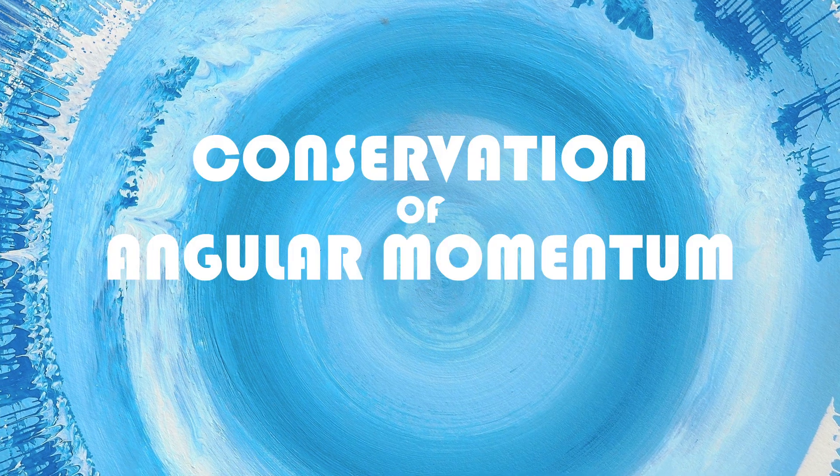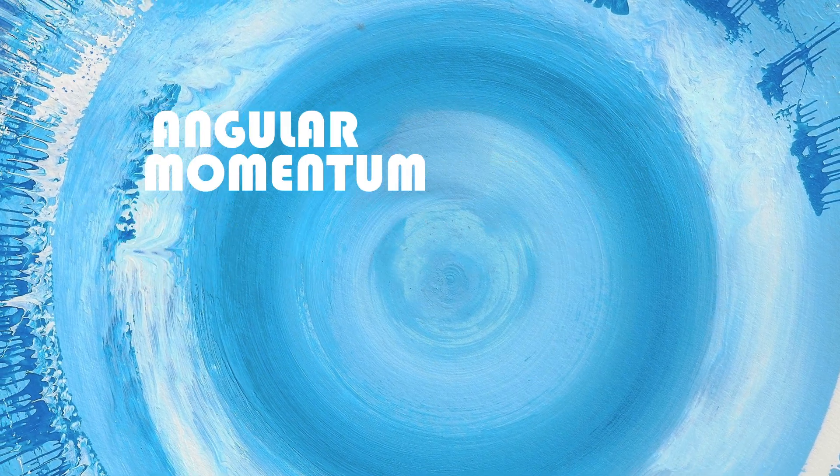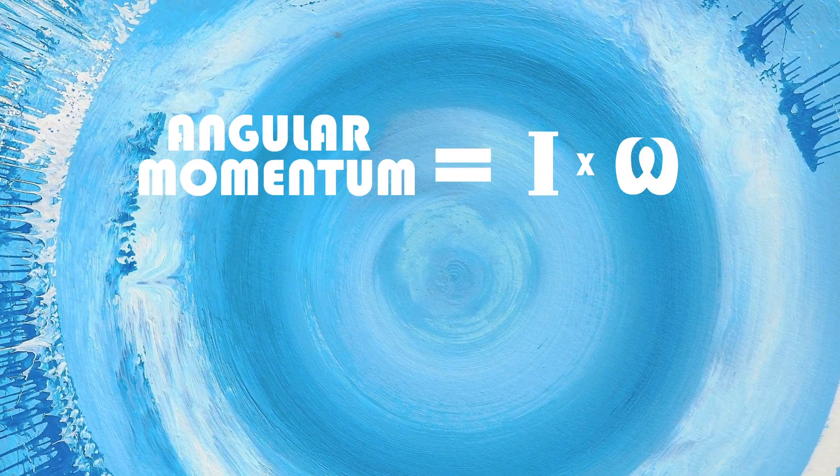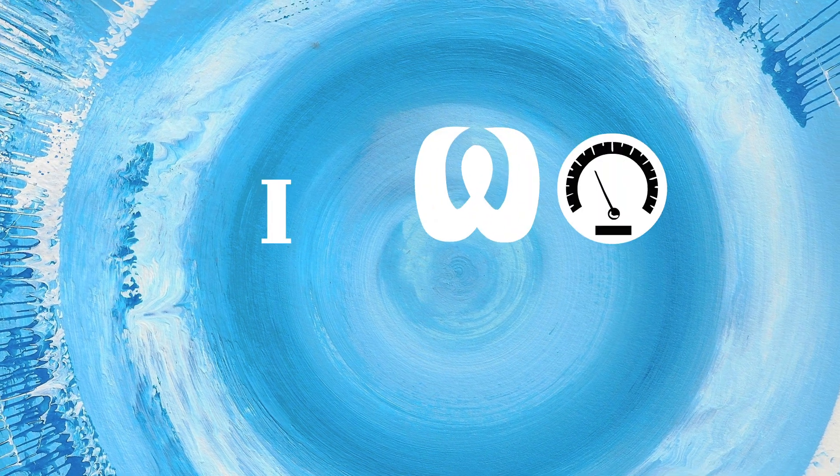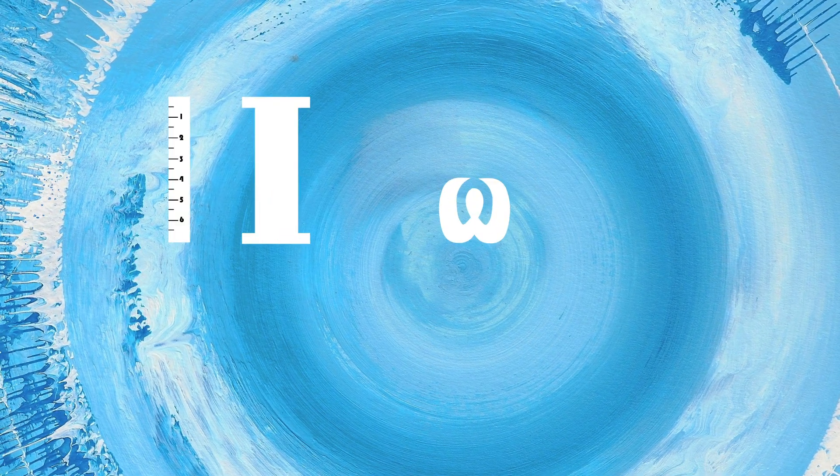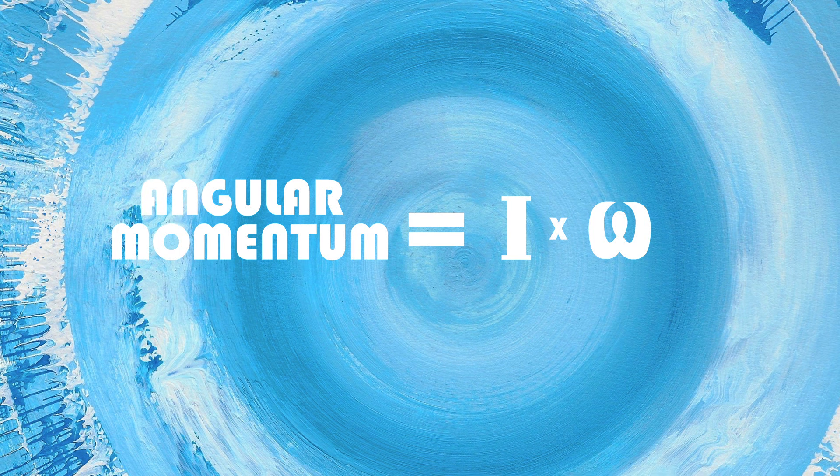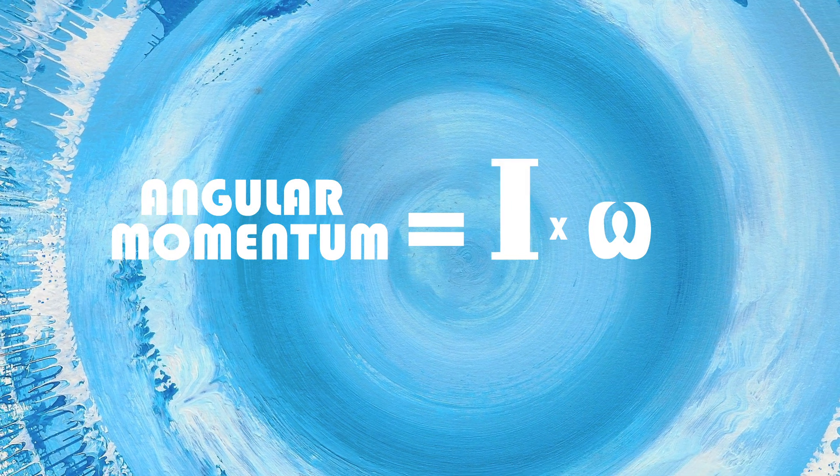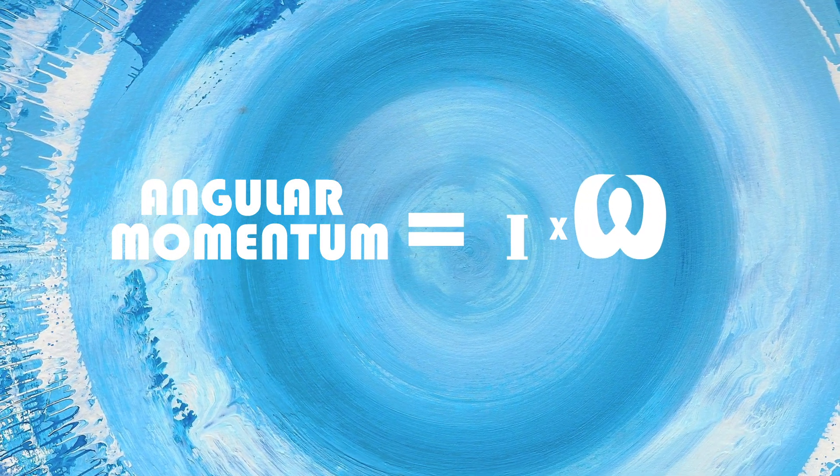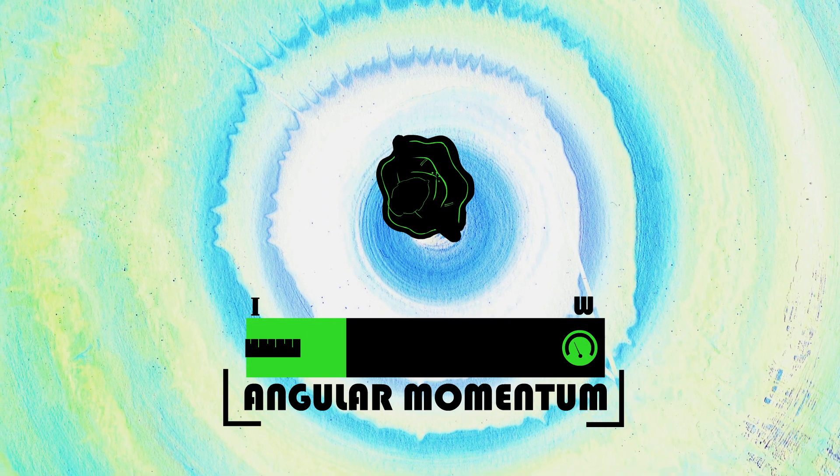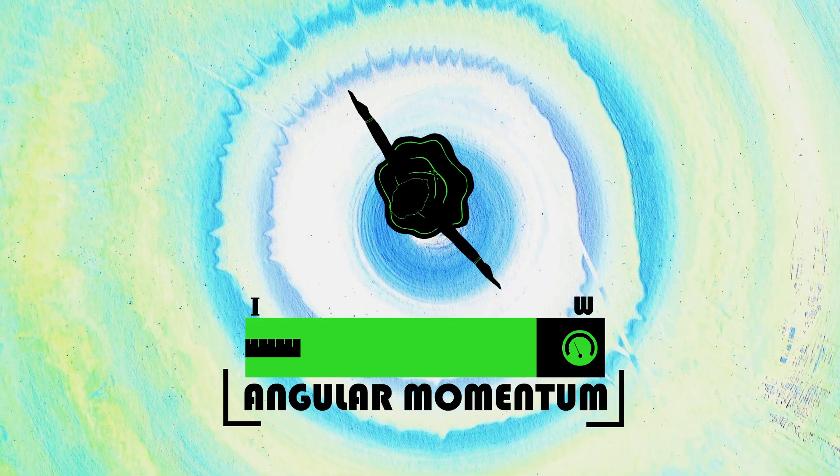This is called the conservation of angular momentum. Mathematically, angular momentum is a product of two numbers, one that gives the spin rate and one that gives the distance of the mass from the axis. If something is freely spinning, as one number gets bigger, the other gets smaller. Arms closer, spin faster. Arms farther, spin slower.